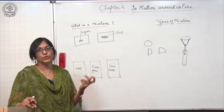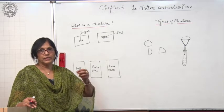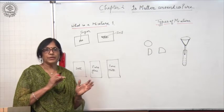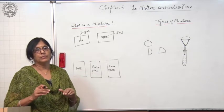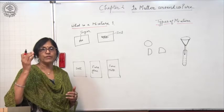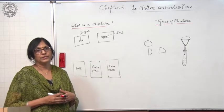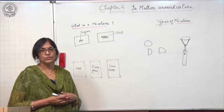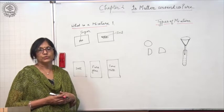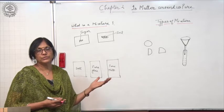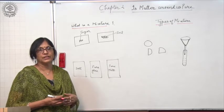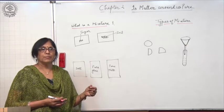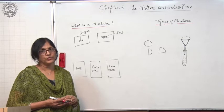On the basis of these activities, we can say that a mixture is made up of a number of substances, whereas a pure substance contains only one type of substance — a single form of matter — which cannot be separated into its constituents by physical processes. For example, sodium chloride dissolved in water forms a mixture. We can separate sodium chloride from water by evaporation. But we cannot separate sodium chloride itself into its constituents by physical processes like filtration or evaporation. So sodium chloride is a pure substance.